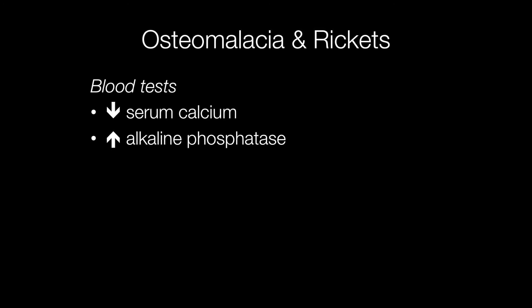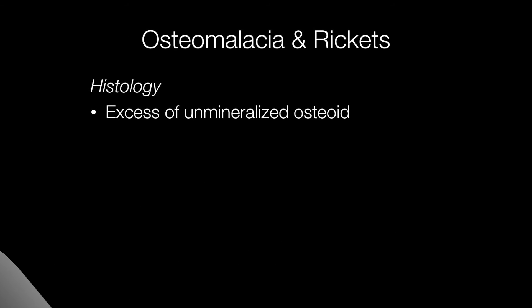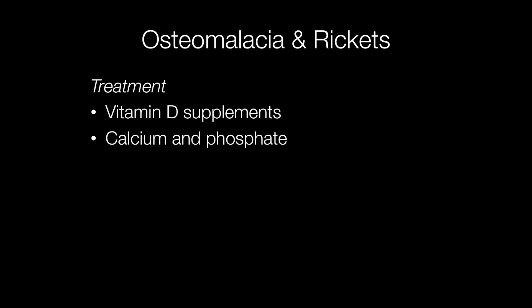Biochemical changes in the blood in osteomalacia and rickets include reduced serum calcium and raised alkaline phosphatase. Under the microscope, bone affected by osteomalacia or rickets shows an excess of un-mineralised osteoid, or bone matrix. The main treatment is vitamin D supplements, and sometimes calcium and phosphate supplements may also be required.